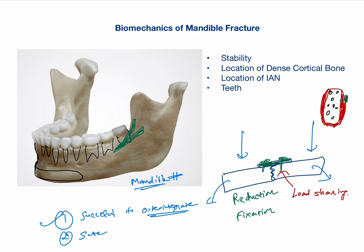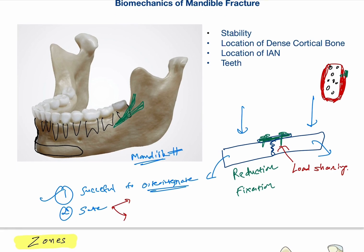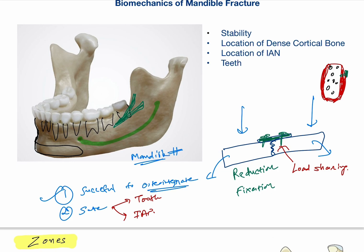Now for safety we have to think about two vital structures: first is the tooth, when talking in terms of plating; and second is our inferior alveolar nerve. The inferior alveolar nerve originates from the lingula and travels all the way to the mental foramen, so this is also an area where placing a screw would not be advisable.